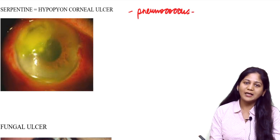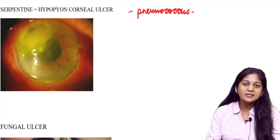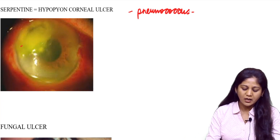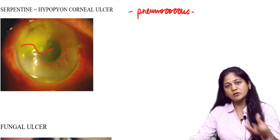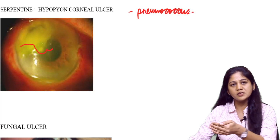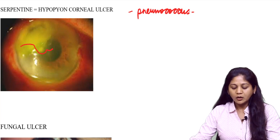Here the ulcer starts like a snake or serpent. It starts from the periphery, migrates to the center, and simultaneously clears out from its tail, moving to the center like a serpent.